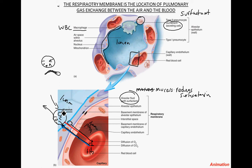If this layer of mucus were not there — if it were dried out — oxygen would not dissolve and would not be transported or diffuse efficiently across the membrane. So this is an up-close detailed look at the respiratory membrane.